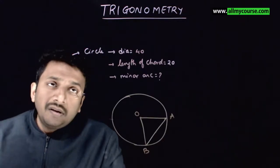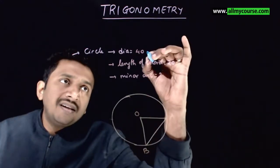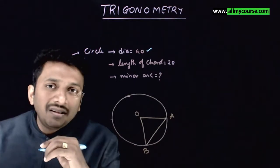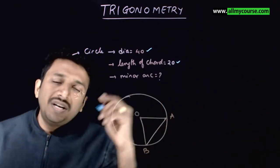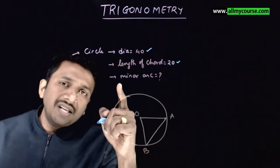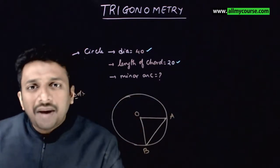Welcome students. In this question, given that the diameter of a circle is 40 cm and the length of the chord of the circle is 20 cm, if that is the case, you are asked to find the length of the minor arc.